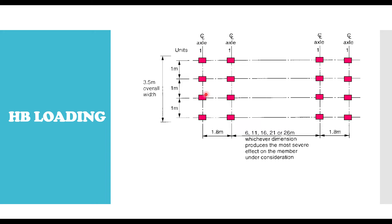Each axle has four wheels, and you can see that the difference between each wheel is 1.0 meters along the transverse direction. Looking along the longitudinal axis of the vehicle, the distance between the first and second axle is 1.8 meters, and between the third and fourth axle is also 1.8 meters. But the distance between the second and the third axle actually ranges from 6 meters, to 11 meters, to 16 meters, 21, or 26 meters.